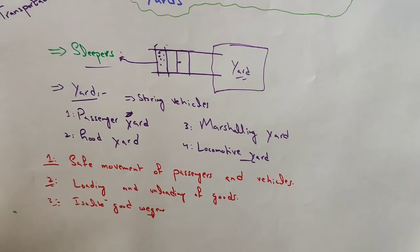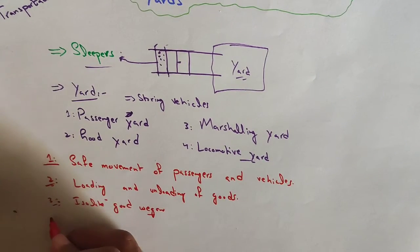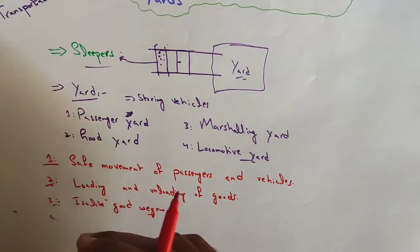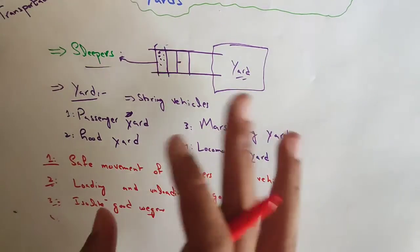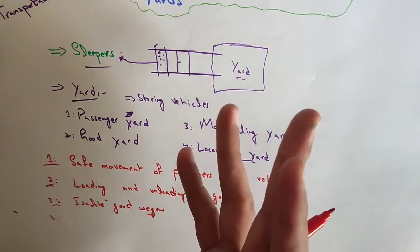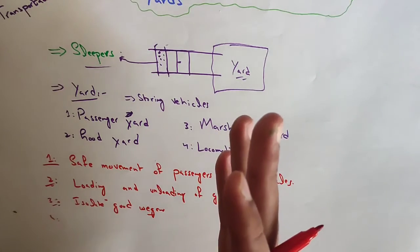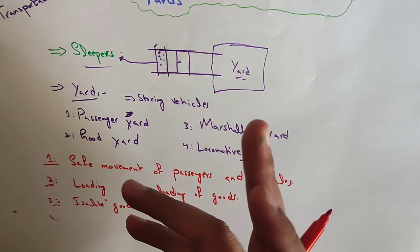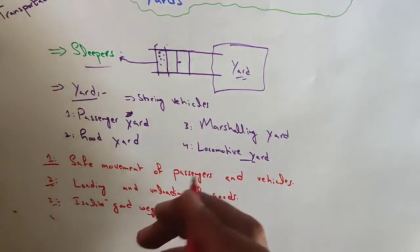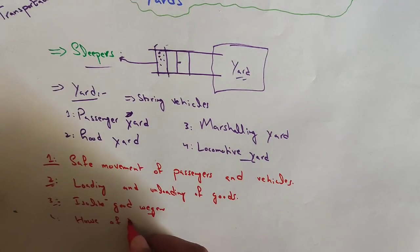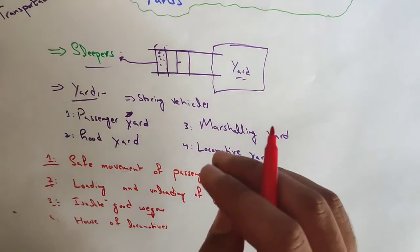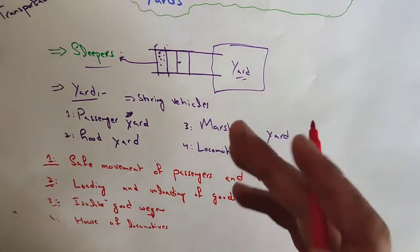The last one is locomotive yard. The main function of locomotive yard is that it is basically the house of locomotives. The facilities of watering, fueling, examining the locomotives, and repairing are provided in this yard.